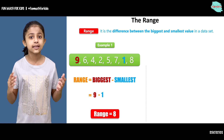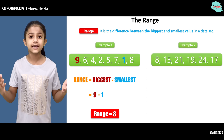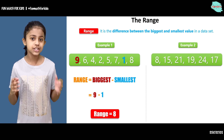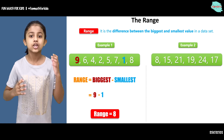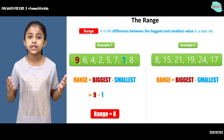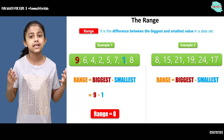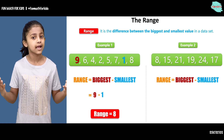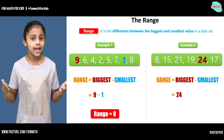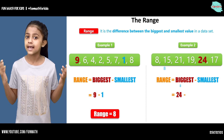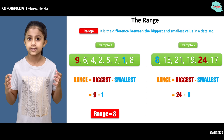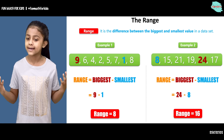Now let's move on and see the second example. Here we have a data set with numbers 8, 15, 21, 19, 24, and 17. To find the range you have to find the difference between the biggest number and the smallest number in the data set. The biggest number is 24 and the smallest is 8. So you will subtract 24 and 8 and you will get your range as 16.